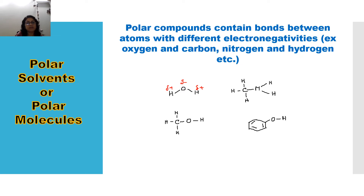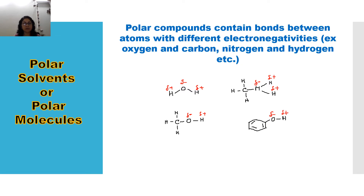In a carbon-nitrogen bond, nitrogen is more electronegative, so nitrogen will be slightly delta negative. Nitrogen is also more electronegative than hydrogen, so hydrogen is delta positive. In ethanol, oxygen is more electronegative than hydrogen and carbon, so oxygen will be slightly delta negative and hydrogen slightly delta positive. Similarly in phenol, oxygen is delta negative and hydrogen is delta positive. So each bond is polar. This is one of the factors we look into to decide whether a molecule will be polar or non-polar.